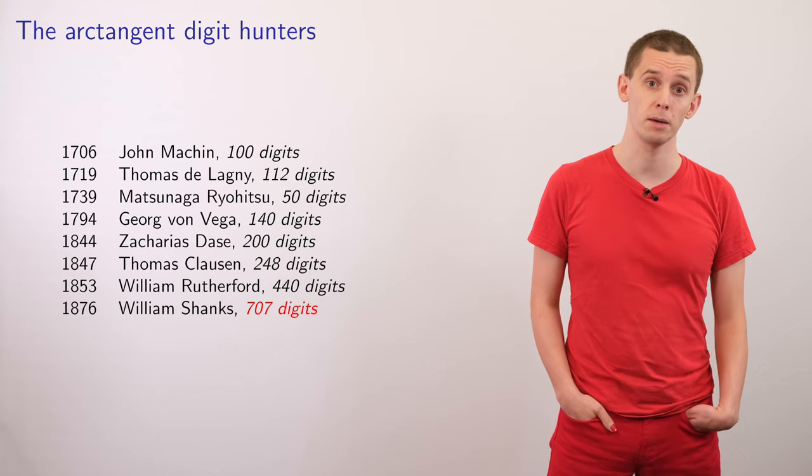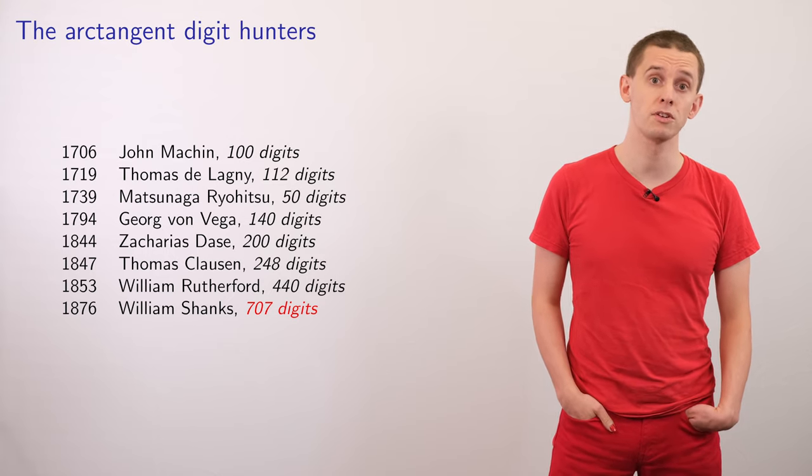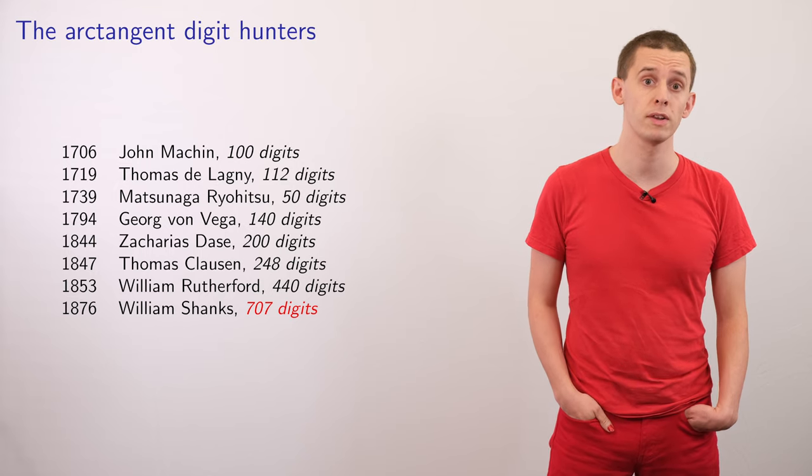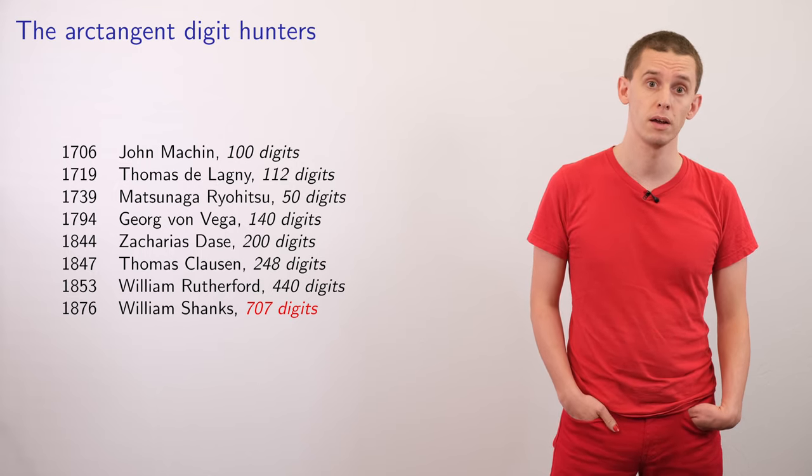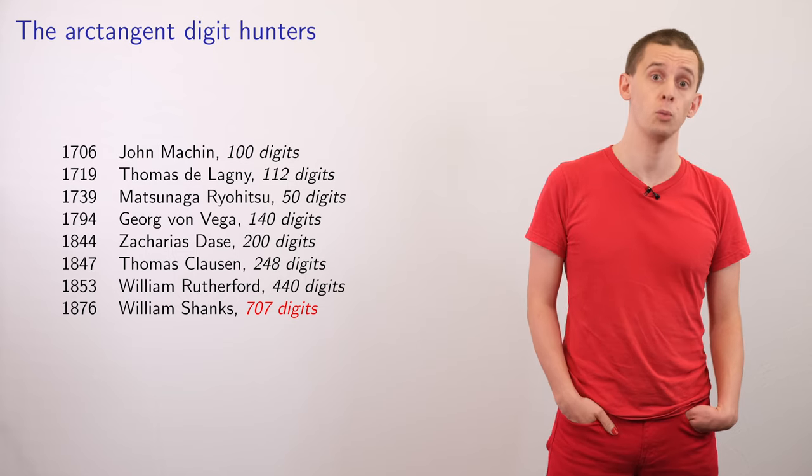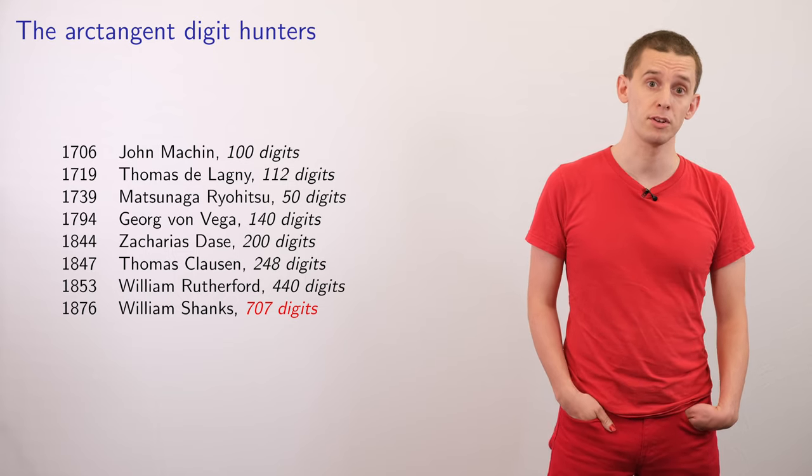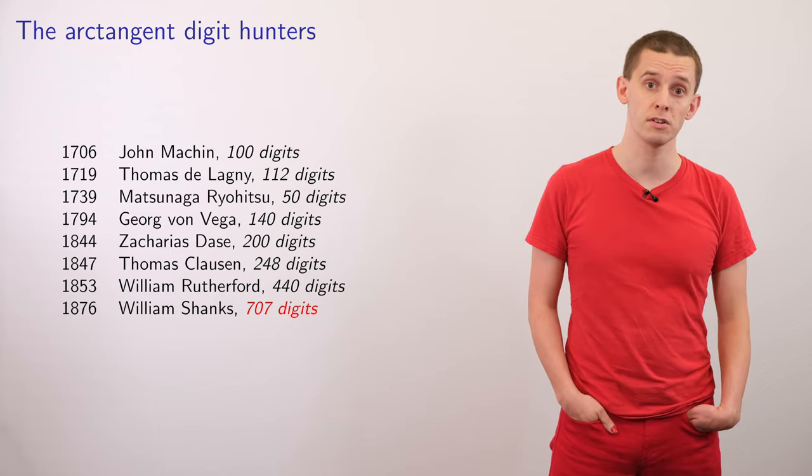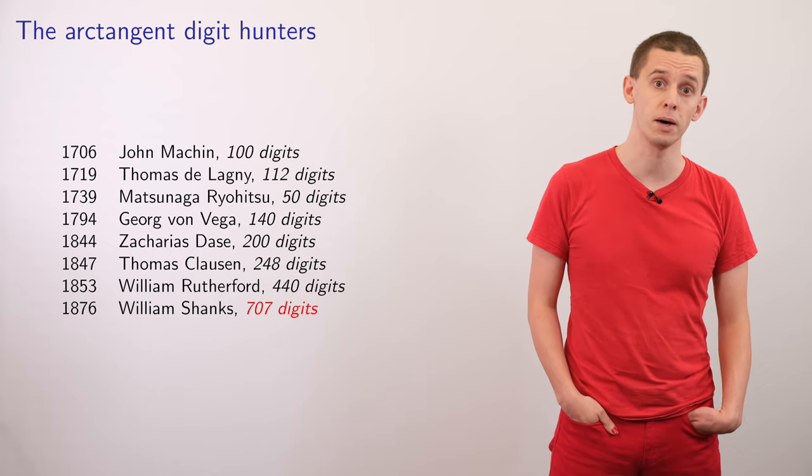Machin's formula really led to a revolution in how people could calculate pi. Throughout the 1700s and 1800s, people progressively used Machin's formula to calculate more and more digits. This culminated in William Shanks, an amateur mathematician, who in 1876 calculated 707 digits of pi.